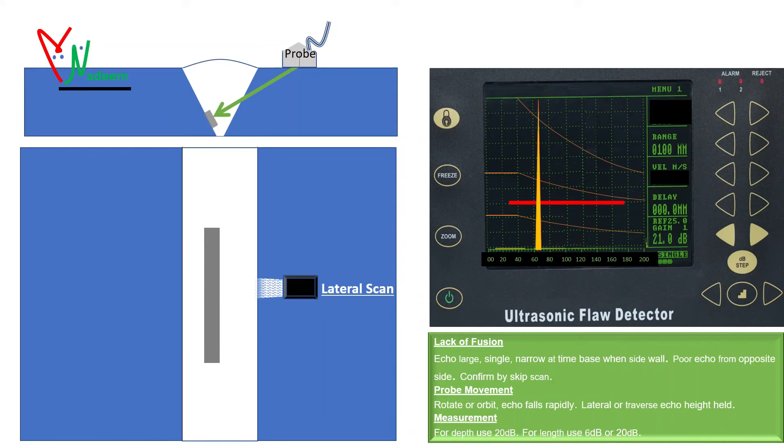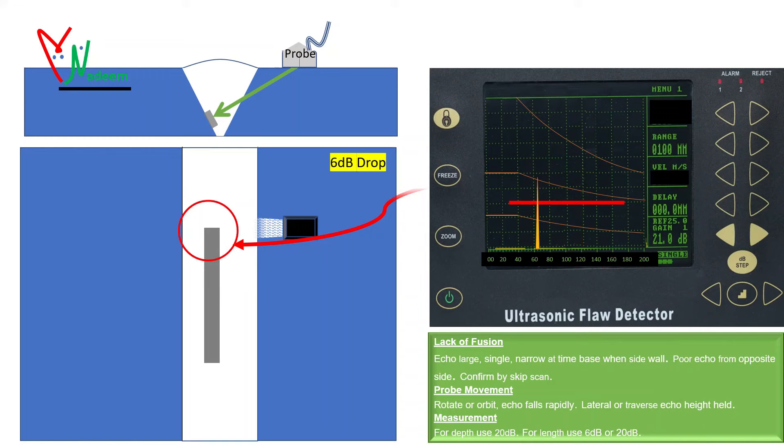As the probe moves at the end of the defect the amplitude will start decreasing. Mark the probe position when the amplitude reaches at 6 dB or 50 percent of full amplitude response. This will be used to measure the length of the defect. Further to evaluate whether the identified defect is lack of fusion, place the probe where the best response was received.